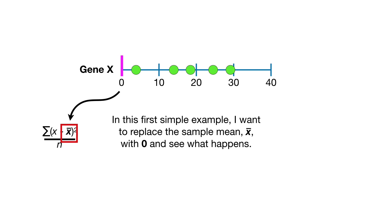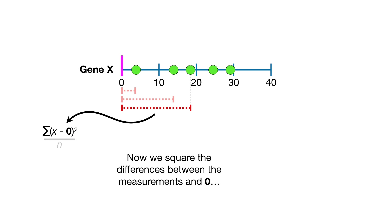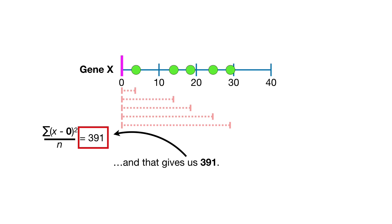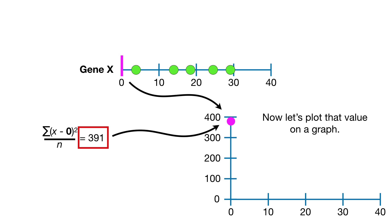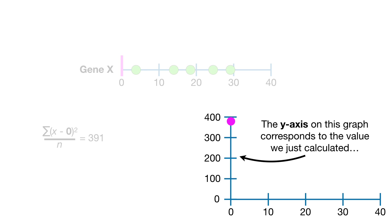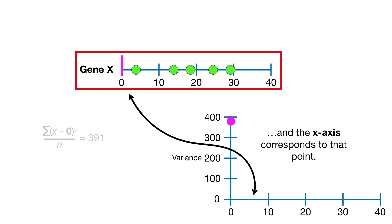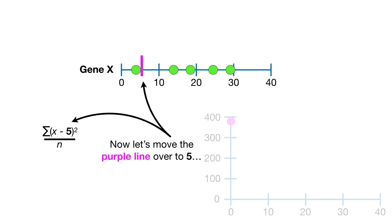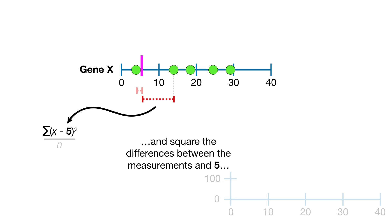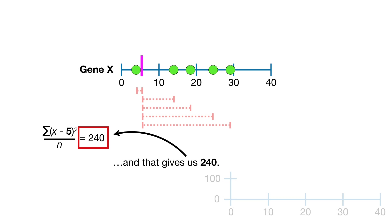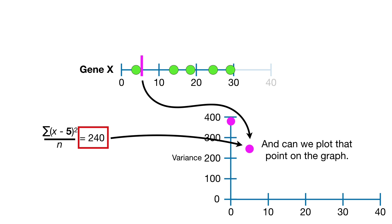In this first example, I want to replace the sample mean x-bar with 0 and see what happens. We square the differences between the measurements and 0, then calculate the average, which gives us 391. Bam! We plot that value on a graph where the y-axis corresponds to the variance around a specific point, and the x-axis corresponds to that point. Now let's move the purple line over to 5, square the differences between the measurements and 5, calculate the average, which gives us 240, and plot that point on the graph.